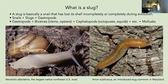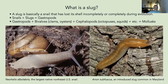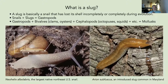A slug is basically a snail that has lost its shell — incompletely or completely — during evolution. Slugs plus snails are gastropods. There are gastropods that live on land, in freshwater, and in the sea. Gastropods, plus bivalves, plus cephalopods, and other groups make up the phylum Mollusca, the second largest phylum of animals after arthropods.